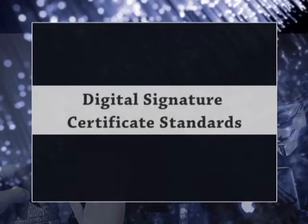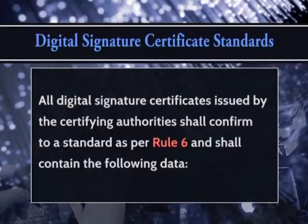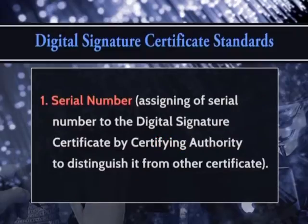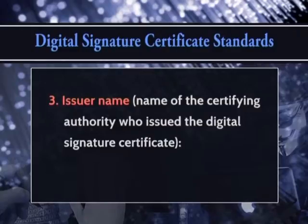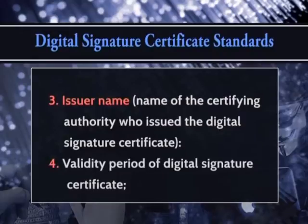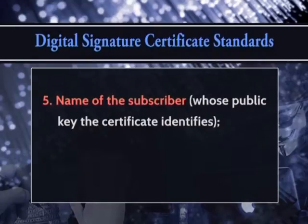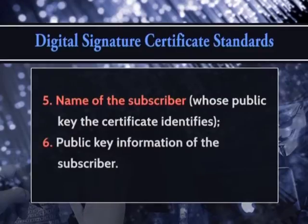Regarding digital signature certificate standards, all digital signature certificates issued by the certifying authority shall confirm to a standard as per Rule 6 and shall contain the following data: a serial number assigned to the digital signature certificate by the certifying authority to distinguish it from other certificates; a signature algorithm identifier identifying the algorithm used by the certifying authority to sign the certificate; the issuer's name — the name of the certifying authority who issued the certificate; the validity period of the digital signature certificate; and the name of the subscriber whose public key the certificate identifies, along with the subscriber's public key information.